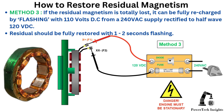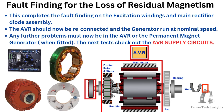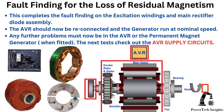Method 3: If the residual magnetism is totally lost, it can be fully recharged by flashing with 110 volts DC from a 240 VAC supply rectified to half-wave 120 VDC. Residual magnetism should be fully restored with 1 to 2 seconds of flashing. This completes the fault finding on the excitation windings and main rectifier diode assembly.